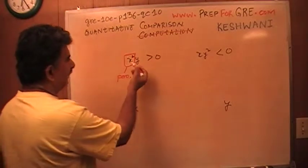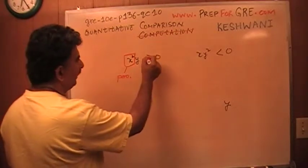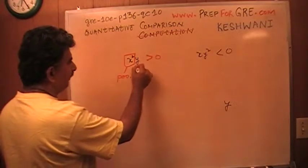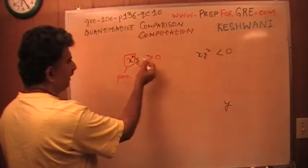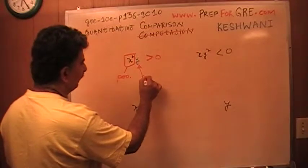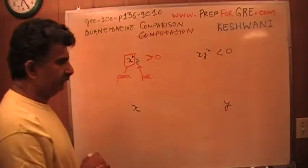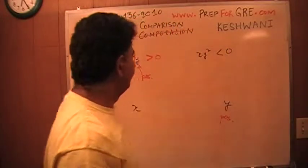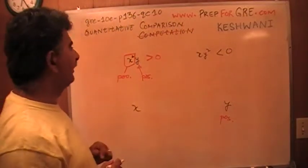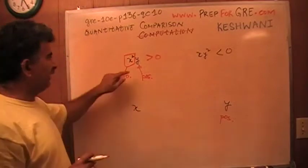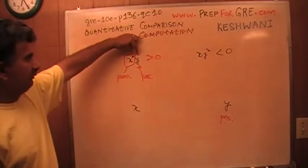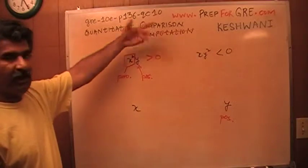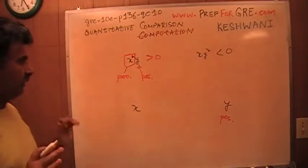So this is positive. And I am told that x squared times y is more than 0. But if x squared is positive, the only way this whole quantity can be more than 0 is if y is also positive. That's the only way — y has to be positive. Because if y were negative, positive times negative would be negative, and it cannot be more than 0. So we have determined that y is positive.